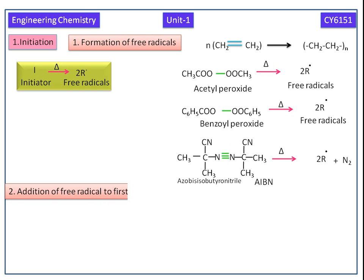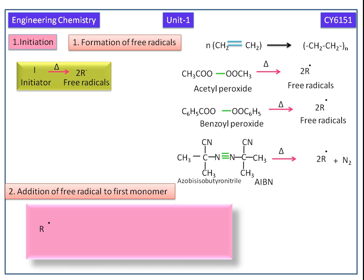Now we have free radicals. In initiation, the second step is addition of free radicals to the first monomer. This is free radical what we get from the initiator. This is the general formula for monomer. Here Y is equal to hydrogen, chlorine, nitrile, etc. This free radical attacks the first monomer and gives the chain initiating species.